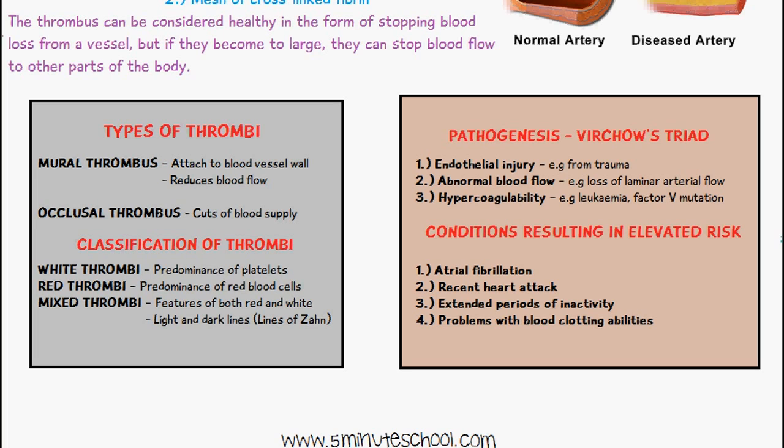You can also have occlusal thrombi, which completely cut off the blood supply, which can result in hypoxia. This is normally the case in much smaller blood vessels. To classify thrombi, there are three types: white thrombi, which consist mostly of platelets; red thrombi, where there is a predominance of red blood cells; and mixed thrombi, which feature both, consisting of alternating light and dark lines called lines of Zahn.